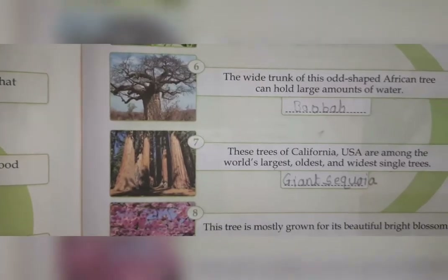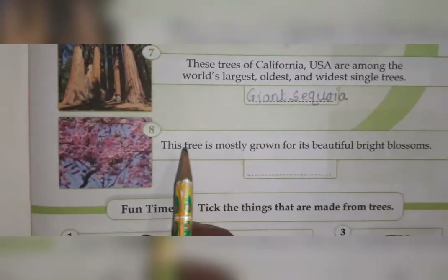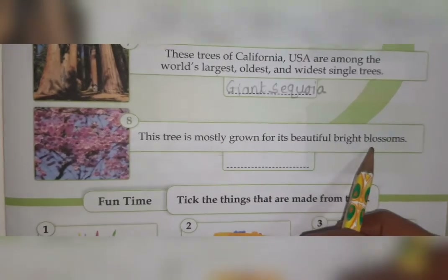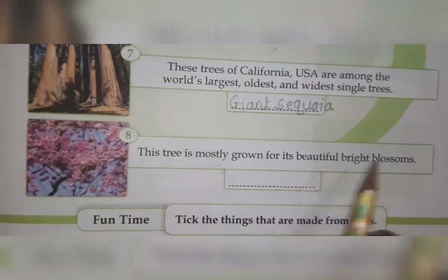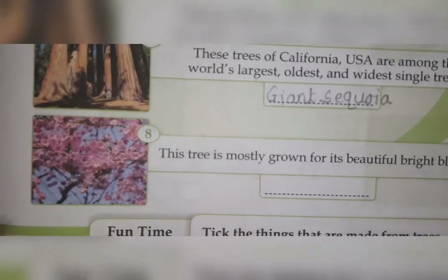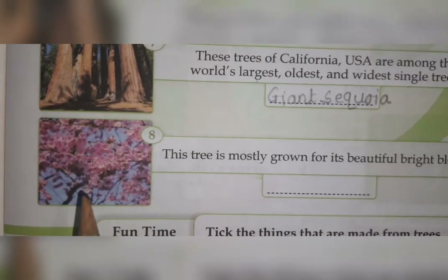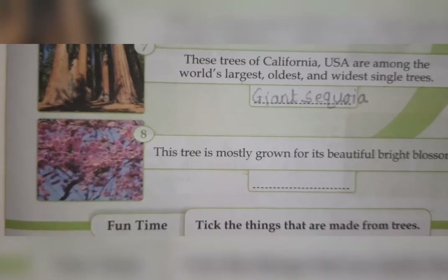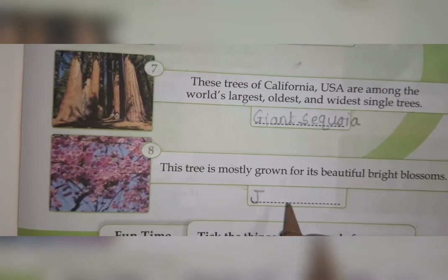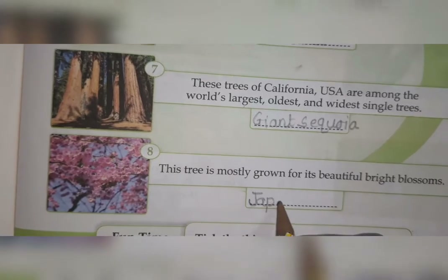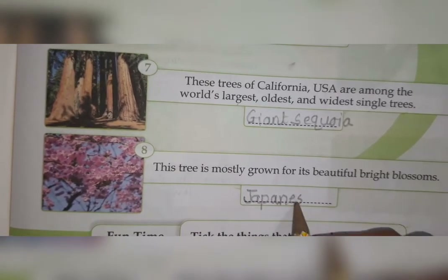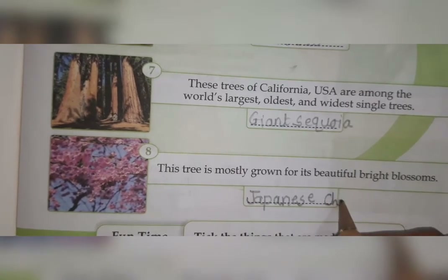The last one: 'This tree is mostly grown for its beautiful bright blossoms.' You can see many flowers on the tree and not a single leaf. This tree's name is the Japanese cherry tree — J-A-P-A-N-E-S-E cherry.